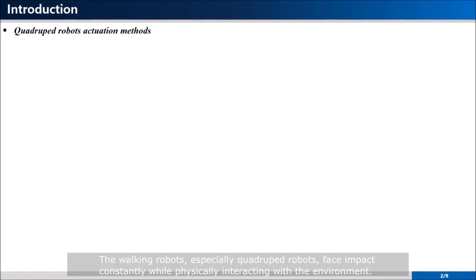Working robots, especially quadruped robots, face impact constantly while physically interacting with the environment. To withstand these impacts and perform dynamic motions such as running and jumping, the actuator design is an essential part of the quadruped robot.